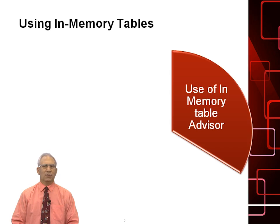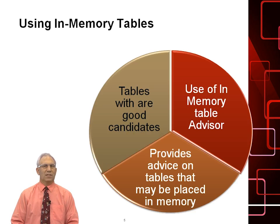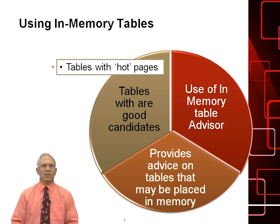How do we determine if a table is a good candidate for an in-memory table? We can use the new feature called the In-Memory Table Advisor. The In-Memory Table Advisor will provide advice on whether a table can be placed into memory — it will tell us if it's a good candidate, whether there are identity columns, and whether there are any referential integrity constraints that can be broken. We will also look at what are called tables with hot pages. Tables that are very hot may be good candidates to be placed into memory, only if they're small, static, and do not change a lot.